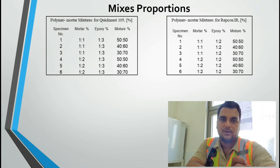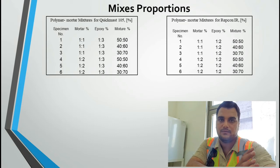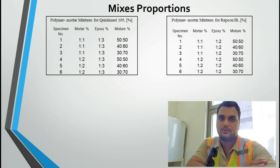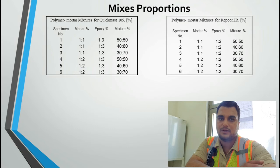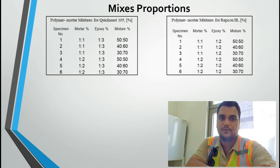Two sets of mixtures were prepared consisting of mortar and polymer to fabricate the polymer mortar composites. The first set included mortar with a ratio of 1:1 cement to sand without water, while the other set included mortar with a ratio of 1:2 cement to sand without water. Each set consisted of different polymer percentages: 50/50, 40/60, and 30/70.